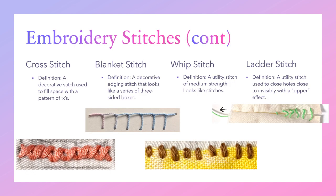Additional embroidery stitches include: the cross stitch, a decorative stitch used to fill a space with a pattern of X's; the blanket stitch, a decorative edging stitch that looks like a series of three-sided boxes; the whip stitch, a utility stitch of medium strength that looks like suture stitches; and the ladder stitch, a utility stitch used to close holes nearly invisibly with a zippering effect.